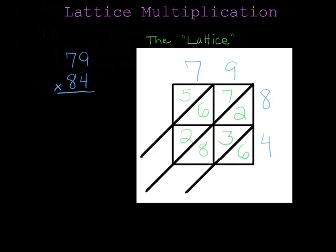The next step to get your final answer is to add down the diagonals. Your first diagonal only has one number, so the six comes down. In my second diagonal, there are three numbers to add. I'm going to first add the eight and the two, because that's ten. Ten plus three more makes thirteen. I can't put two digits here — I can only put one. So just like regular addition, I'm going to carry the one into the next diagonal. For thirteen, the three will stay down here, and I carry a one into my next diagonal.